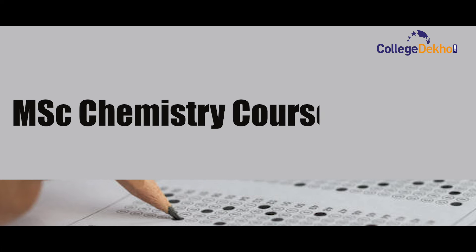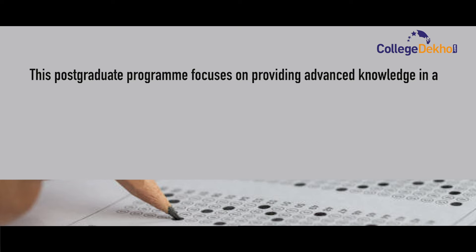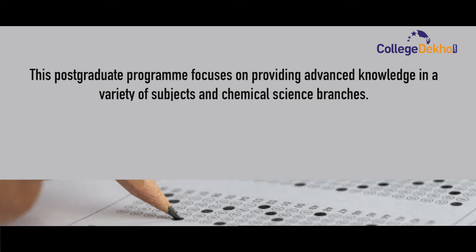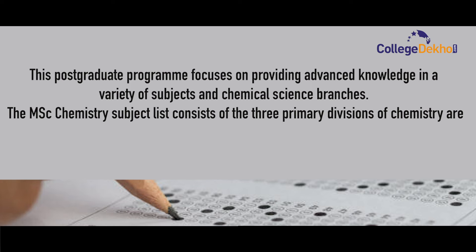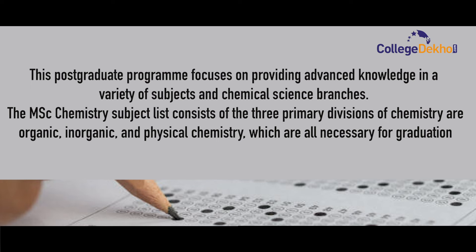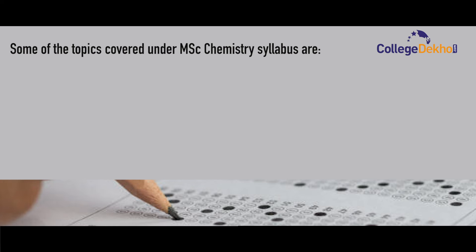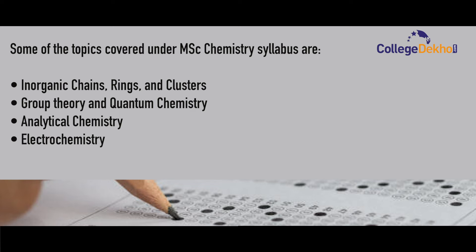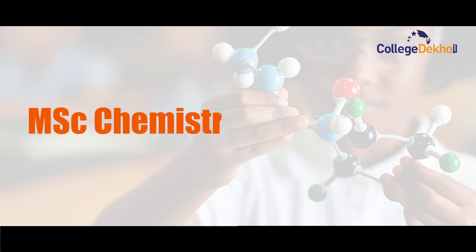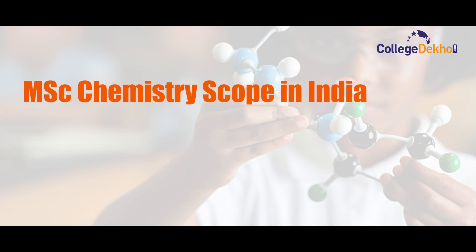Now let us take a glance at the MSc Chemistry course syllabus. This postgraduate degree focuses on providing advanced knowledge in a variety of subjects and chemical science branches. The subject list consists of three primary divisions: organic, inorganic, and physical chemistry. Topics covered include inorganic chains, rings, clusters, group theory, quantum chemistry, analytical chemistry, electrochemistry, and thermodynamics.